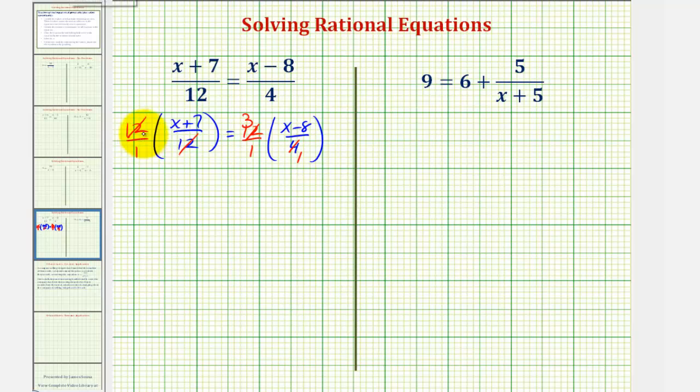So now we have x plus 7 equals 3 times the quantity x minus 8. Now we'll clear the parentheses and solve for x. We have x plus 7 equals, we distribute, 3x minus 24.